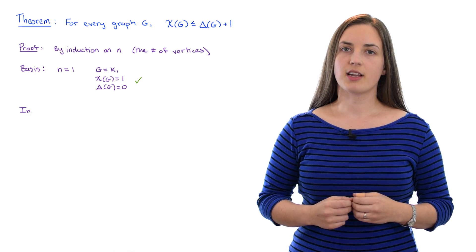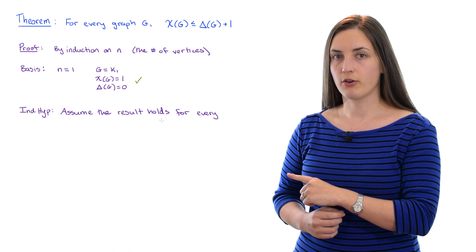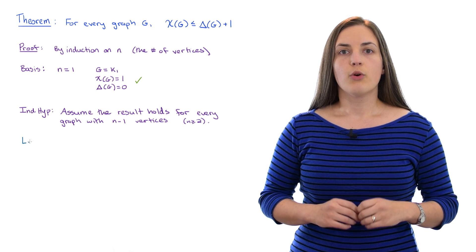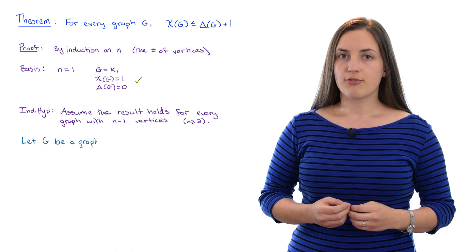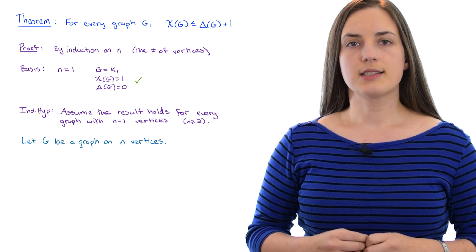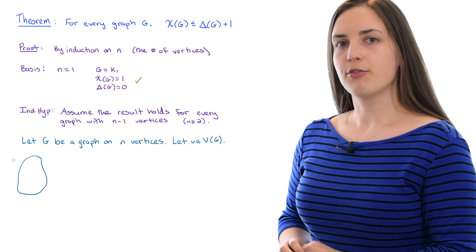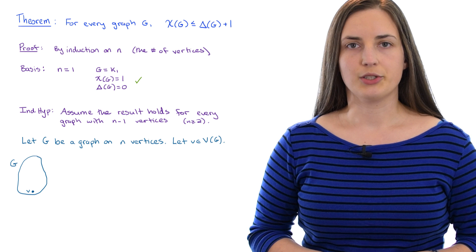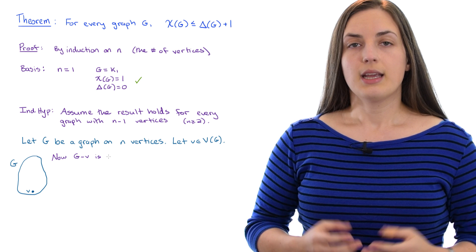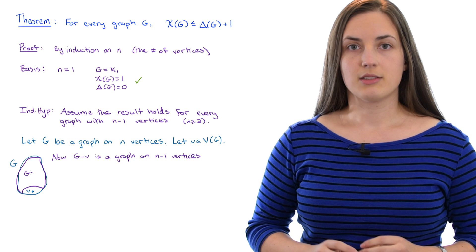Next comes the inductive hypothesis. We assume that the result holds for every graph with n minus one vertices, for some n greater than or equal to two. Now we want to take G to be a graph on n vertices and show that the theorem must hold for this graph as well. To do this, let's take V to be any vertex of our graph — I'll draw a blob to represent the graph and just pick out a particular vertex, anyone will do. We notice that G with vertex V removed is a graph with n minus one vertices, so we can use the inductive hypothesis on this smaller graph.